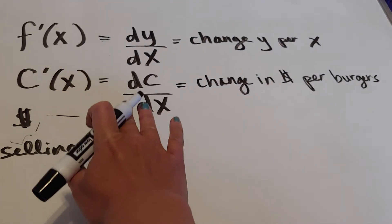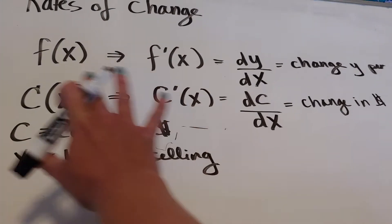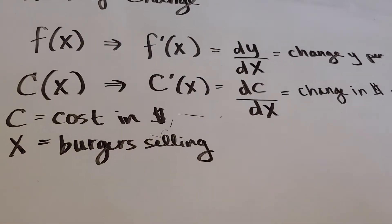So c prime of x is the rate of change. It'd be dollars per burger if that's what the x's and the c's represented.